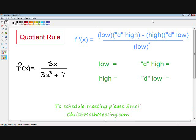So let's get started with our example. Once again, we have the function 5x all over 3x cubed plus 7. So our low is just our denominator, which is 3x cubed plus 7.